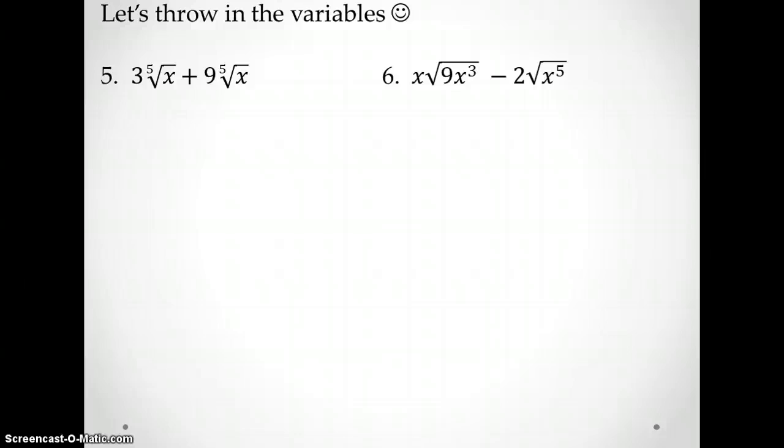The last little bit, and this is the last slide. Is if we throw in the variables, which as we've seen the last couple of days, sometimes can even make it easier. So, you'll notice here, I already have a 5th root of x and a 5th root of x. Are those like radicals? Yes. So I'm just going to add them together. 12 5th roots of x. Done and done. That is our answer.